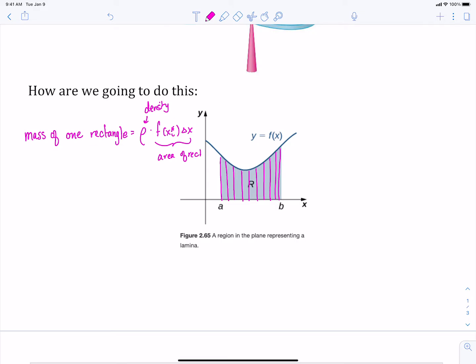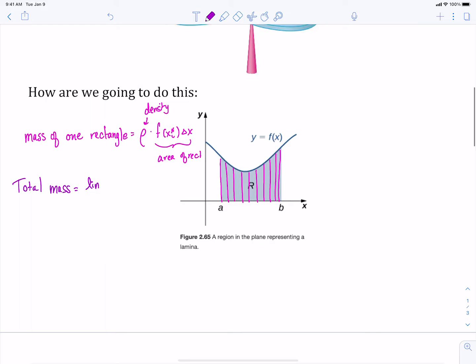If we want the total mass, what we're going to do is make those rectangles smaller and smaller. So the total mass equals the sum from i equals 1 to n of the density times the area of each of our slices. And we're going to take the limit as n goes to infinity because we're going to make more and more slices. And this is going to end up being the integral from a to b of our density function times f of x, and our delta x is going to turn into dx. So this is how we're going to figure out the total mass, which we need because we divide by the total mass when we're figuring out where our center of mass is.